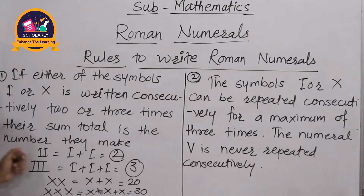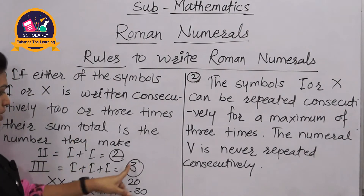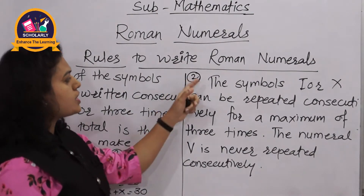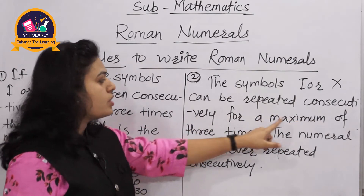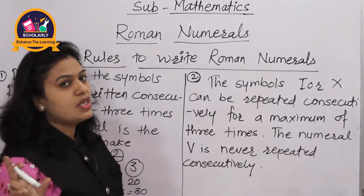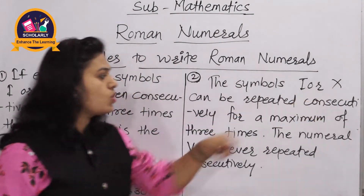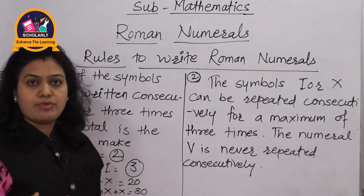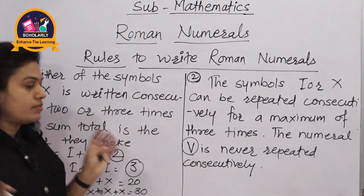So the first rule means: if we write I or X two or three times consecutively, their sum total is the number they make. Now the second rule: the symbols I or X can be repeated consecutively for a maximum of three times. The numeral V is never repeated consecutively. That means we can write I or X only up to three times — not more — and V cannot be repeated at all.